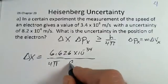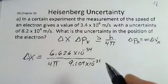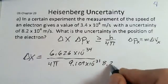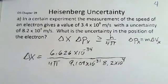The mass of the electron, 9.109, 10 to the minus 31. And the uncertainty in the velocity, 8.2 times 10 to the fourth meters per second. So those are our factors.